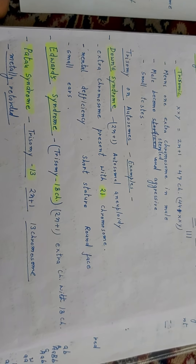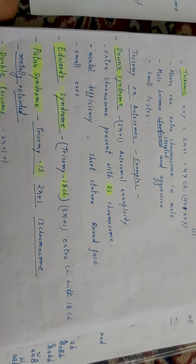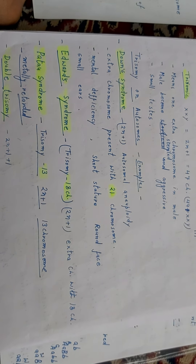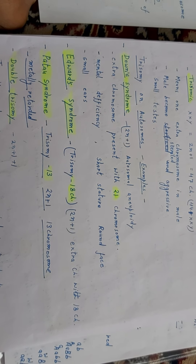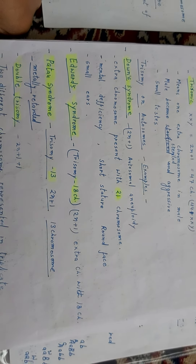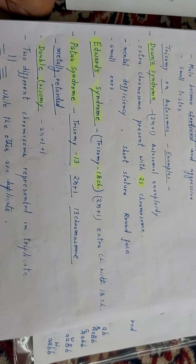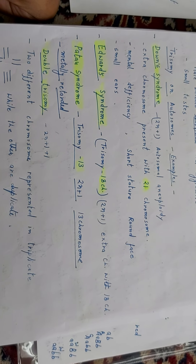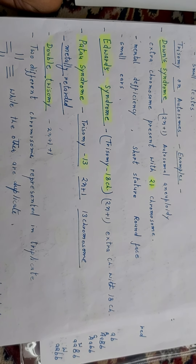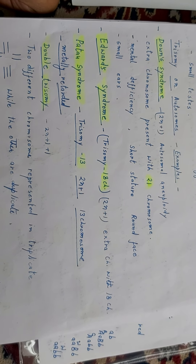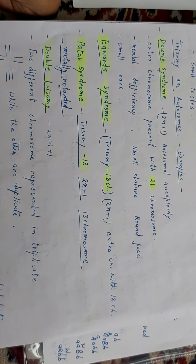Trisomy on autosomes can also develop syndromes. Down syndrome: 2N plus 1 — an extra chromosome is present on chromosome number 21 — is an example of autosomal aneuploidy. The affected individual shows mental deficiency, short stature, round face, and small ears. Next is Edward syndrome: trisomy on chromosome 18, meaning extra chromosome on chromosome number 18. Patau syndrome: extra chromosome on chromosome 13 — also known as trisomy 13.